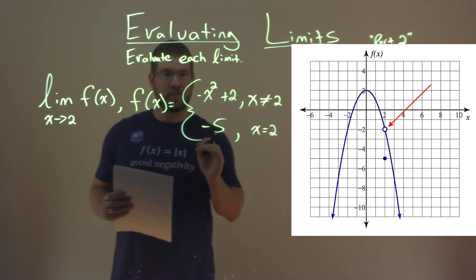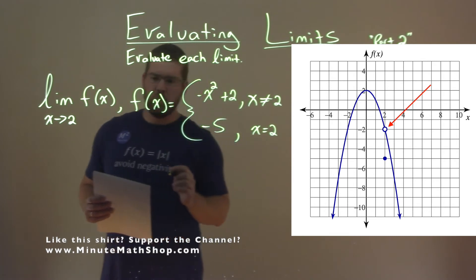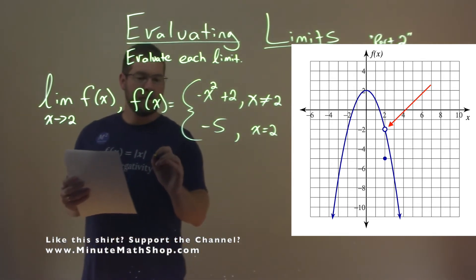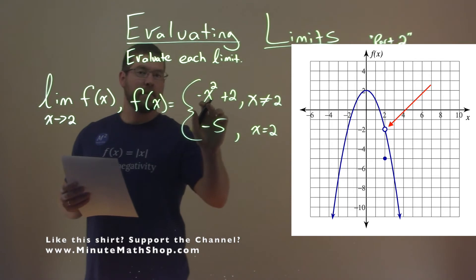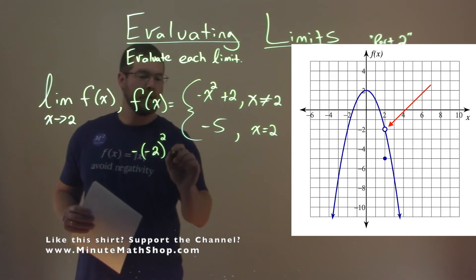Also because this is a continuous function except at x equals 2. So what we do is we say, all right, what happens if we put a 2 in for our x for the top equation? So we have negative 2, and that's going to be squared, and the negative out front, plus 2.